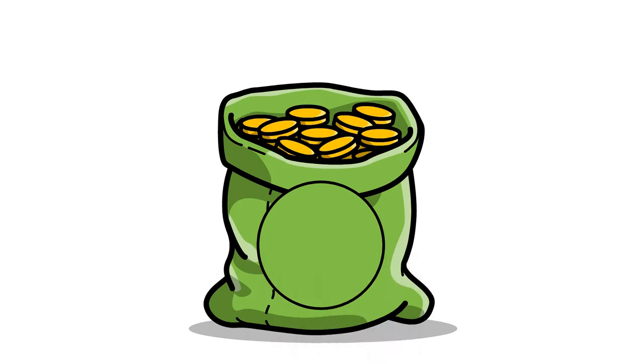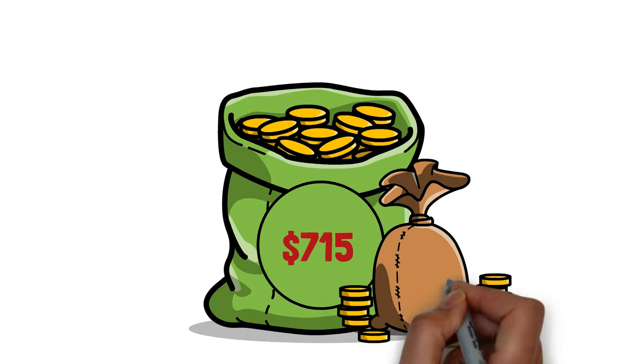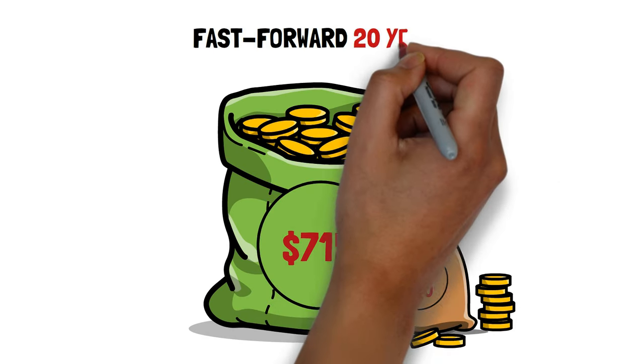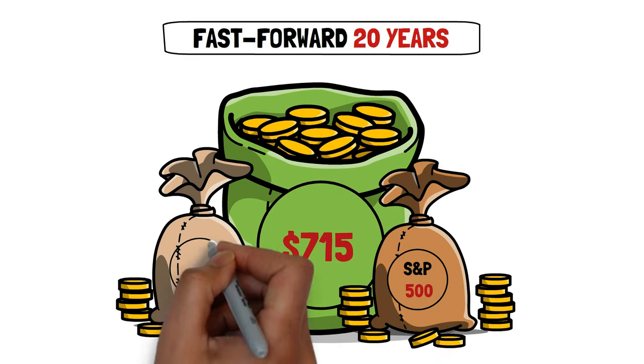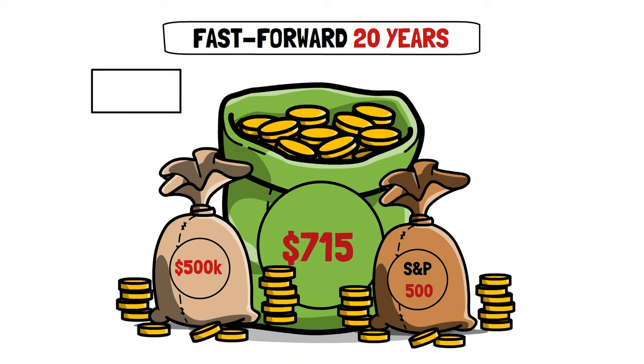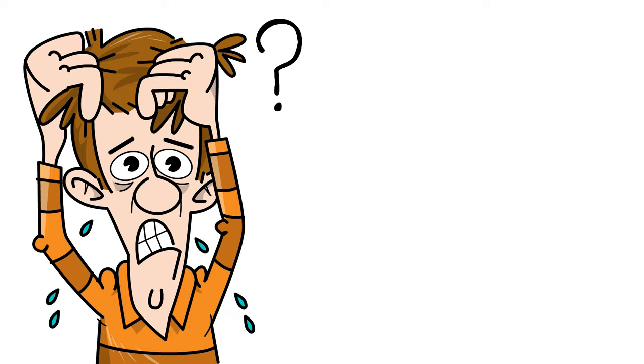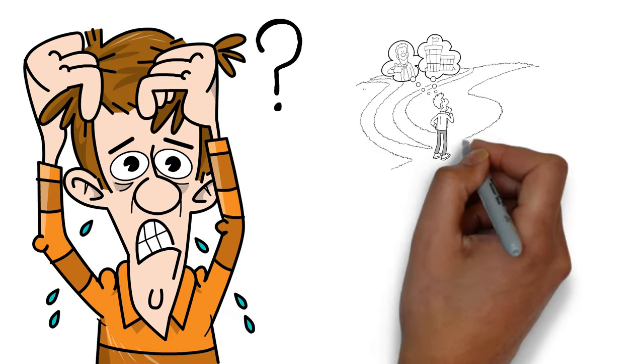Imagine funneling that same $715 into an S&P 500 index fund every month. Fast forward 20 years and you're staring at a whopping half million dollars. That's the silent tax of lifestyle inflation. So stop scratching your head and wondering why you're not on the path to riches. The answer could be parked right in your driveway.